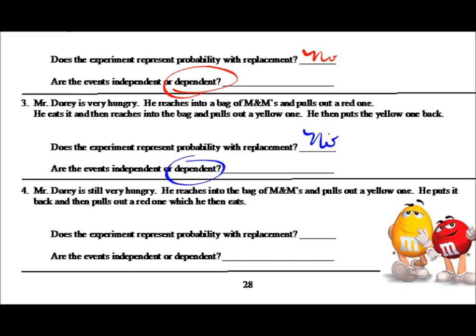On example four, Mr. Dory is still hungry. He reaches into the bag and pulls out a yellow one, then puts it back. He reaches in again, pulls out a red one, and eats it at the end of the experiment. Did he replace the first one before drawing the second? Yes, he did. Because he replaced the first one after drawing it, here we have probability with replacement, and the events are independent.